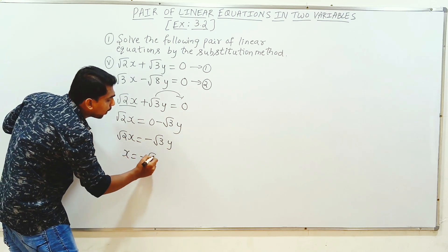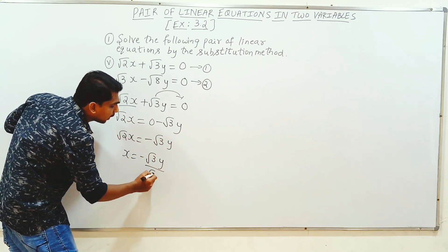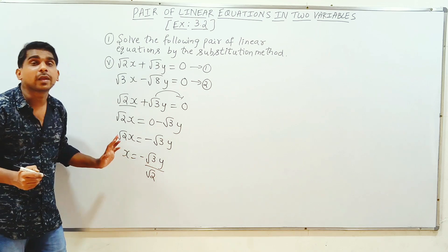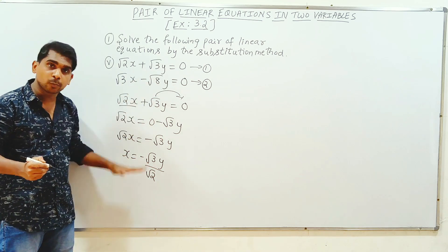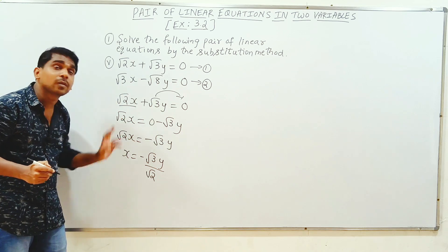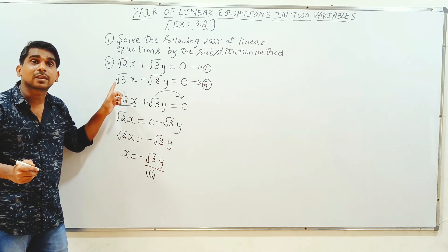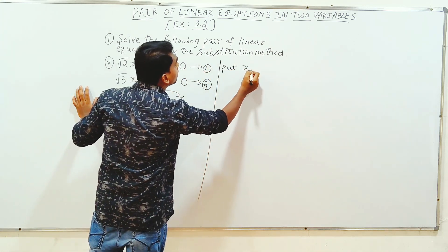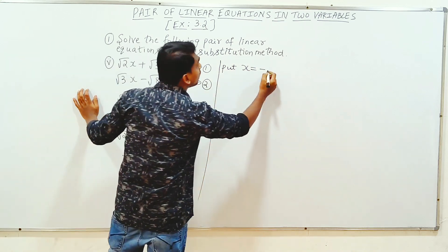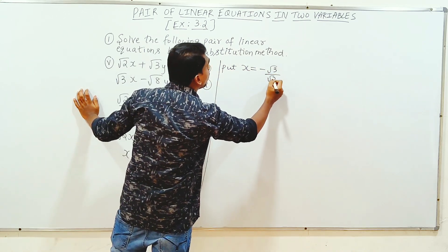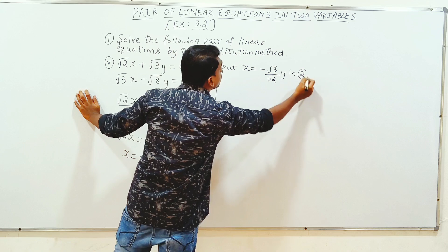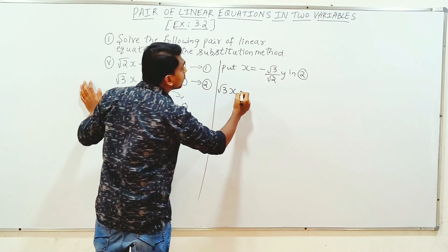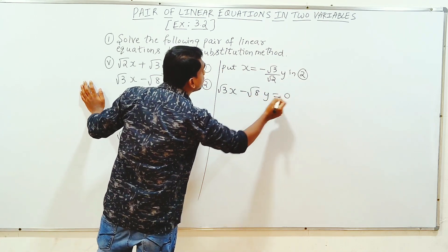x equal to minus root 3y over root 2y. Substituting into equation 2: root 3x minus root 8y is equal to 0.